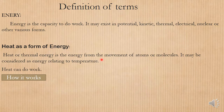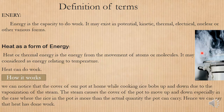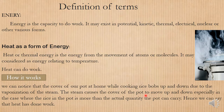How can heat do work on a body? Here we have a pot of rice — we can see the steam leaving the pot and the cover of the pot is up. The cover of a pot at home while cooking rice moves up and down due to the vaporization of steam. The steam causes the cover to move up and down, especially when the rice in the pot is more than the pot can carry. Hence we can see that heat has done work.